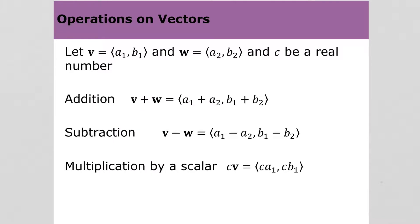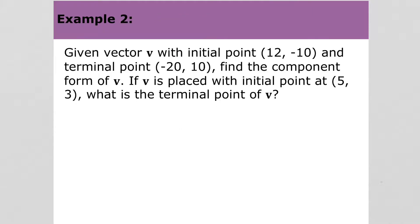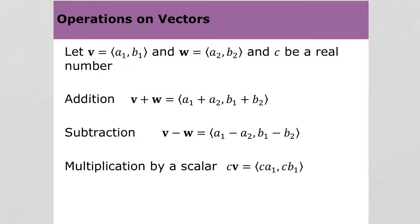We looked over properties of addition and multiplication in the previous video. You can add vectors, you can subtract vectors, and you can multiply vectors by a scalar. So when you add them, you just add the x values and add the y values. Subtracting – same type of deal. Multiplying by a scalar, you're just multiplying each of the x value and the y value by the number.